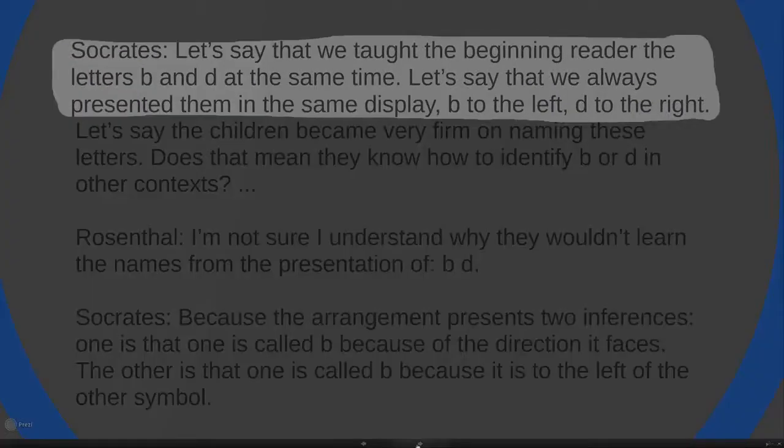Socrates says, well, now let's say that we taught the beginning reader the letters B and D at the same time. Let's say that we always presented them in the same display, B to the left, D to the right. And let's say the children became very firm on naming these letters, B, D, B, D, B, D, okay. Does that mean they know how to identify B or D in other contexts?